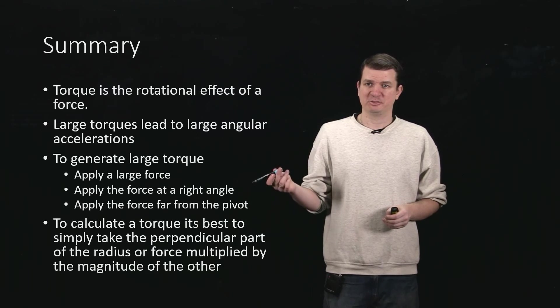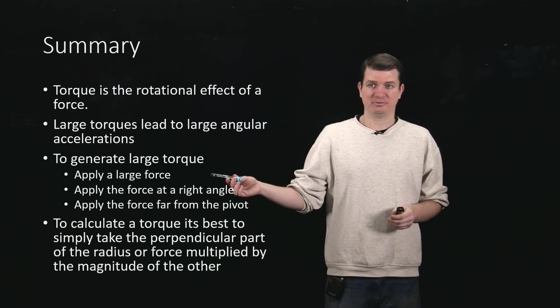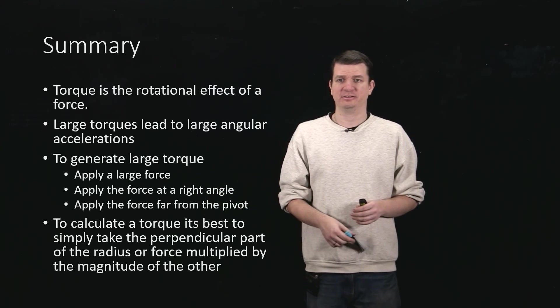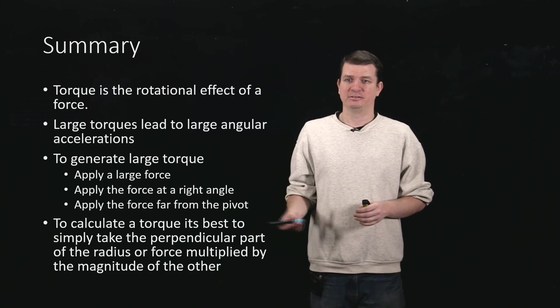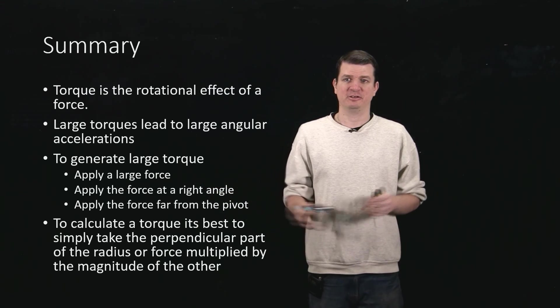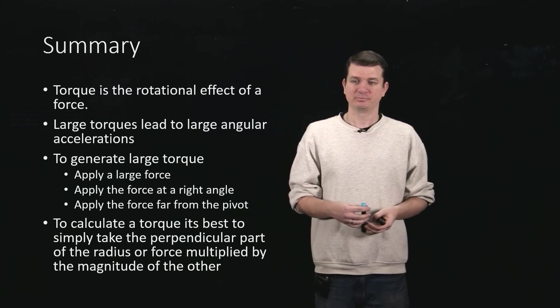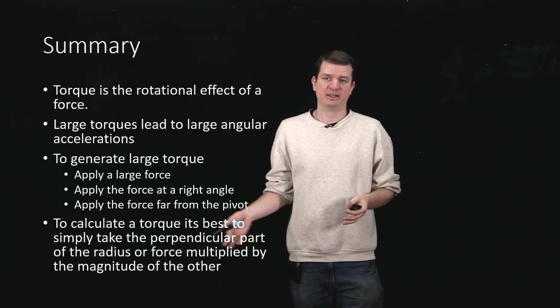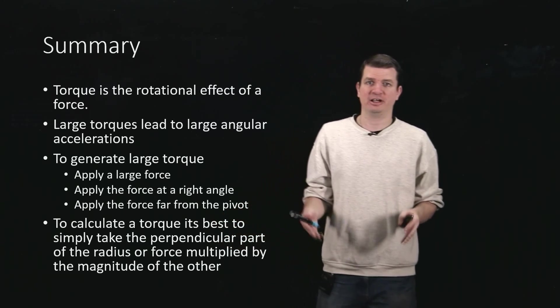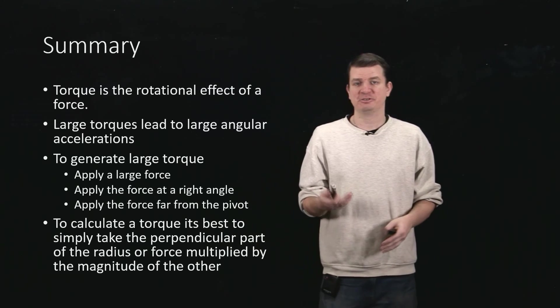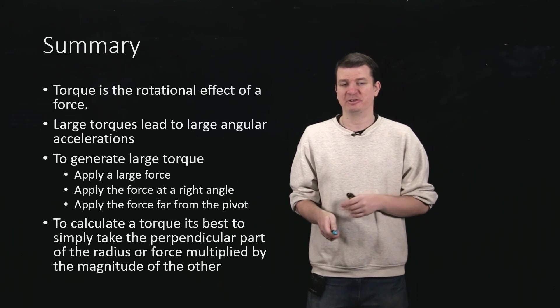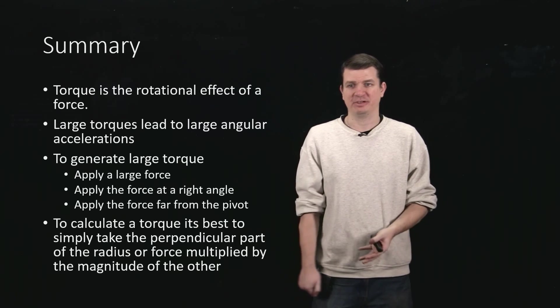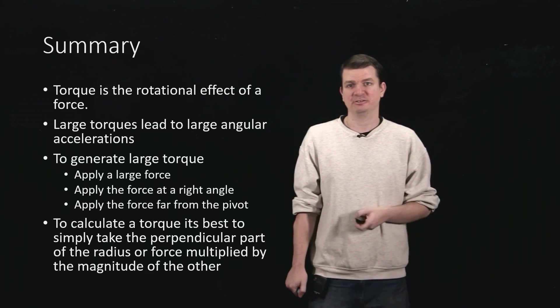And the things that it depends on, of course, is the magnitude of the force, the angle at which you apply the force, and how far from the pivot are you applying the force. And then we've seen that really the best way to calculate this is not so much by taking r F sine theta, but actually realizing I can just grab the perpendicular component of any one of those vectors and multiply it by the other vector, or by the magnitude of the other vector.